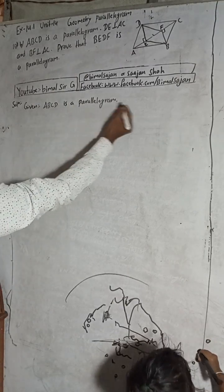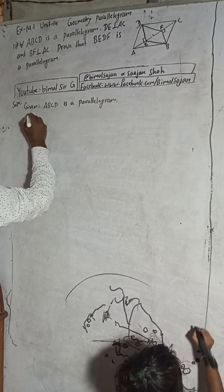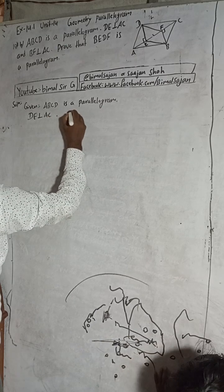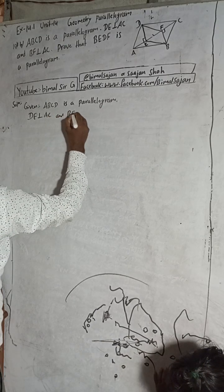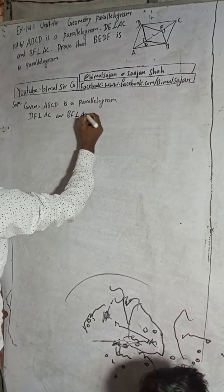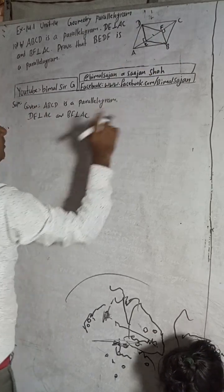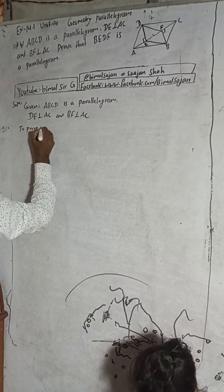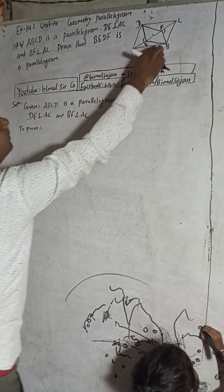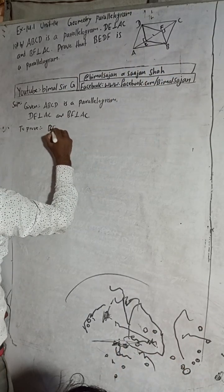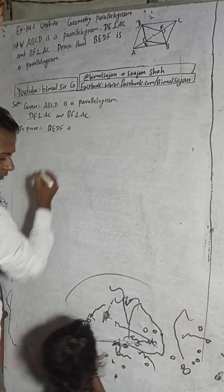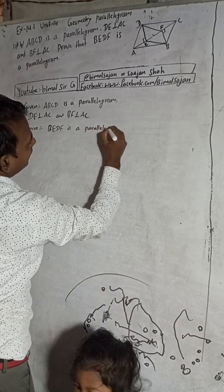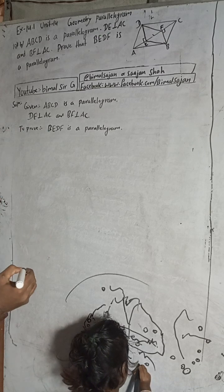I have written the given parts: ABCD is a parallelogram, DE is perpendicular to AC, and BF is perpendicular to AC. Now we have to prove that BEDF is a parallelogram.